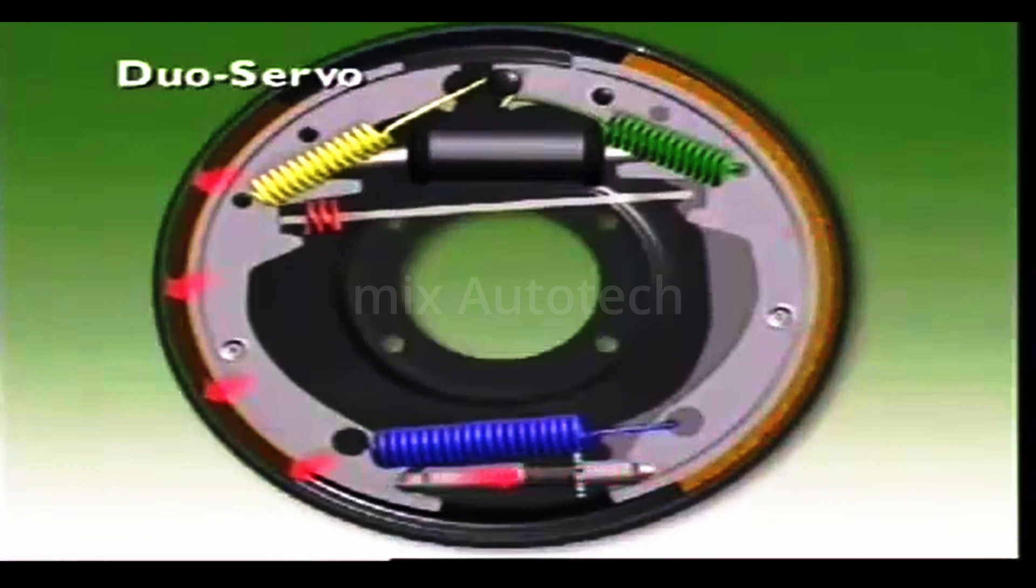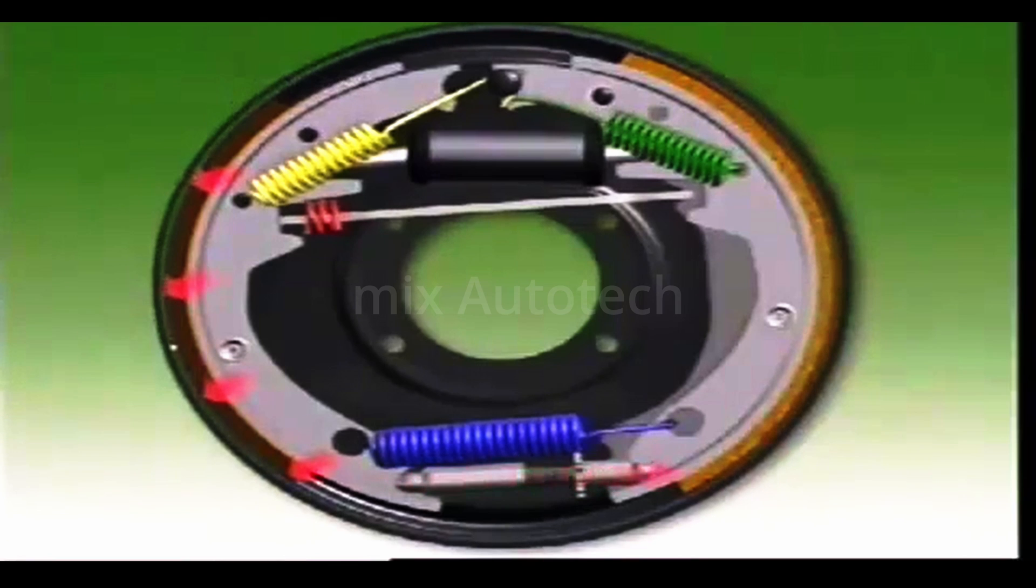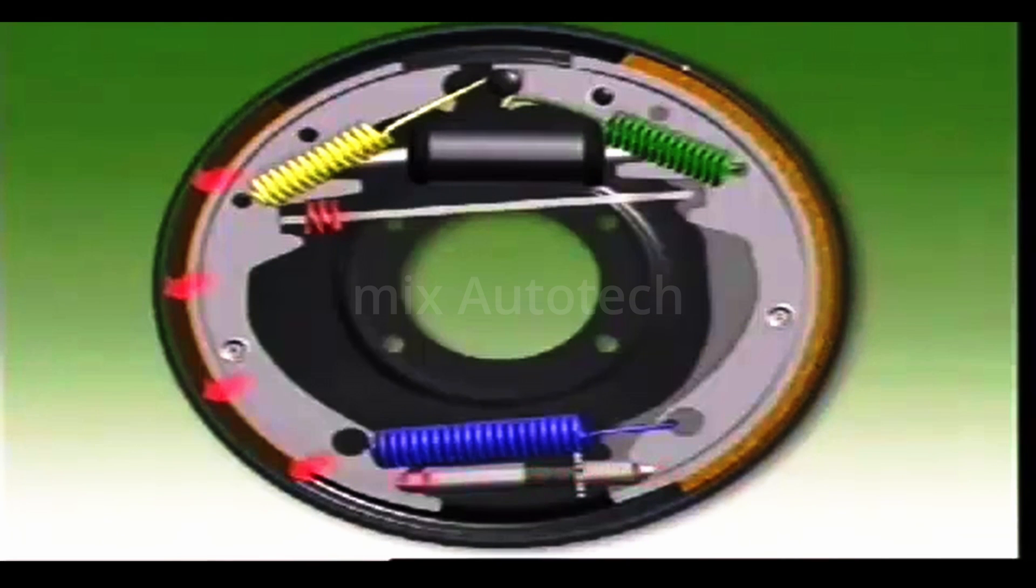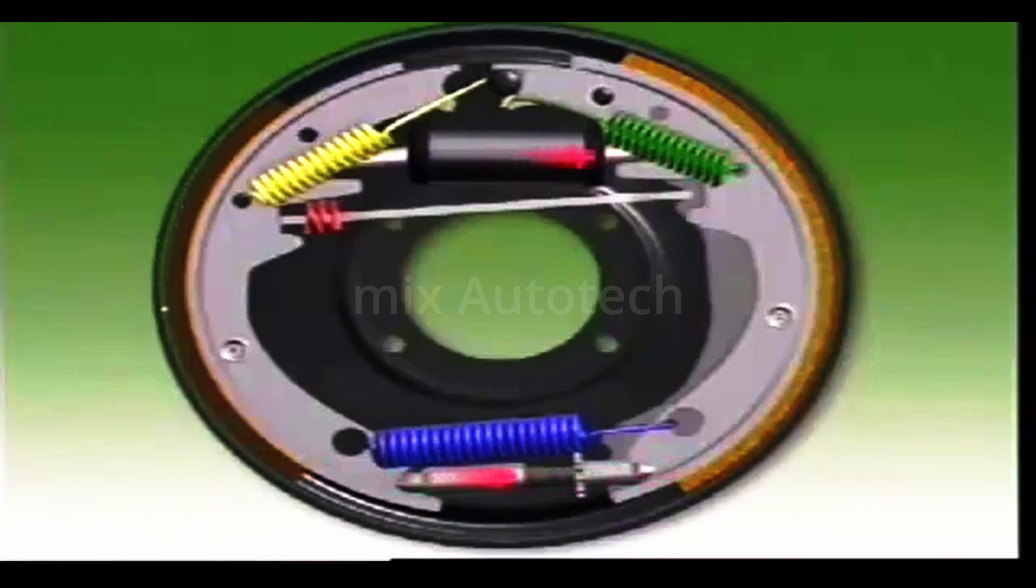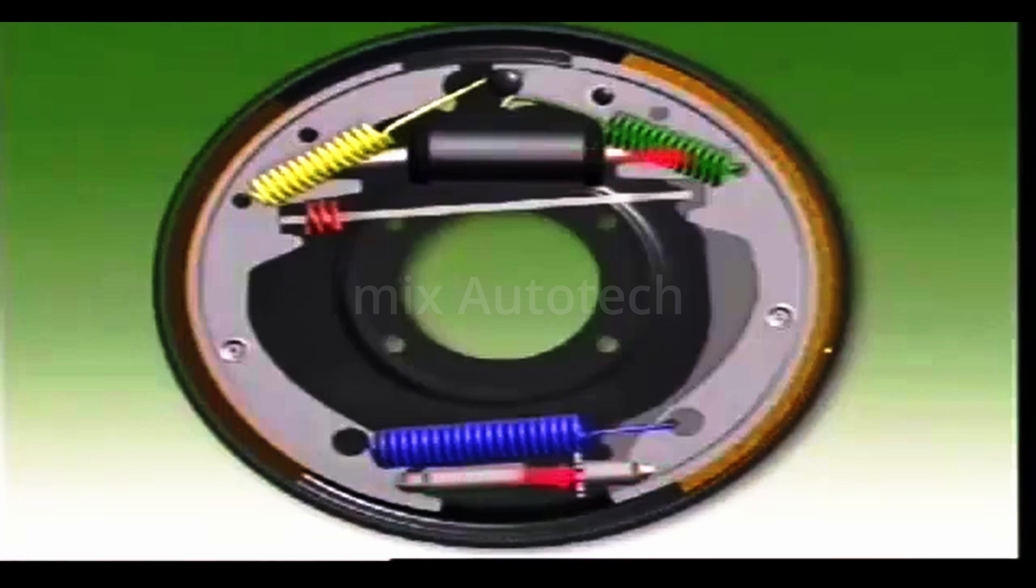The self-energizing force of the primary shoe and its wheel cylinder application force is now transferred to the secondary shoe through the lower linkage. Force is then being applied to the secondary shoe from both ends: the wheel cylinder at the top and the linkage from the primary shoe at the bottom.